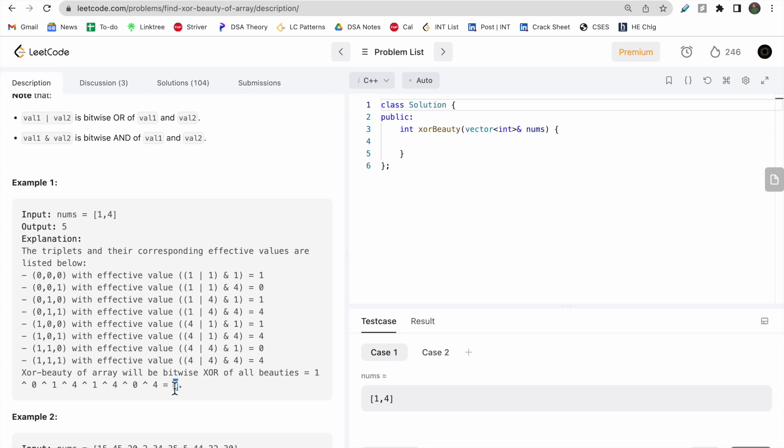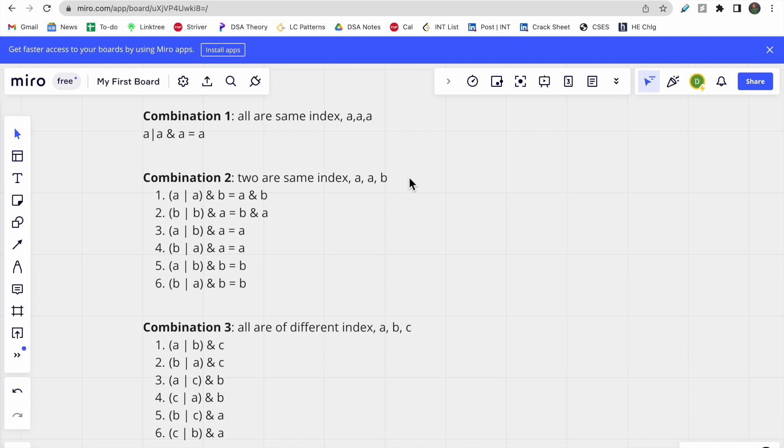Instead of using a brute force approach with bitwise OR and AND operations, try to think about different possible conditions. Consider an array with elements a, b, c, possibly with repeating numbers, where you need to select triplets.